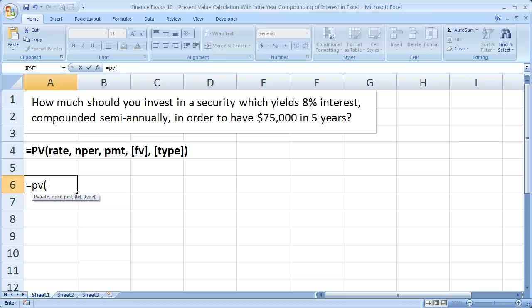Now, it's very important to know that anytime that you are compounding your interest more often than once a year, you're going to have to adjust the rate, the number of periods, and where applicable, the payment number. And all of these things you have to do here, it's very similar to the Finance Basics 9 tutorial. Just present value instead of future value.